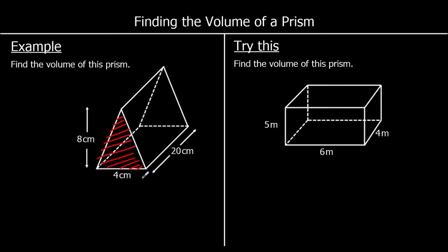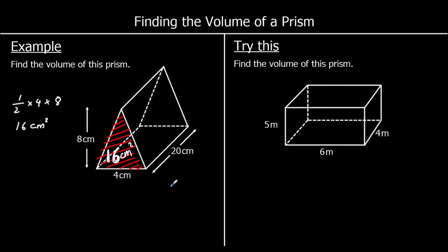The area of a triangle is base times height divided by 2, or half base times height. So half times 4 times 8, which is the same as 2 times 8, which is 16. Area is measured in centimeters squared. So the shape on the front has got an area of 16 centimeters squared.